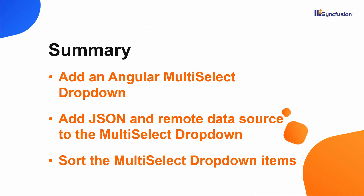In this video, we have seen how to create an Angular project using Visual Studio Code and add a Syncfusion Angular multi-select drop-down to it. Also, we have seen how to load JSON and remote data sources in the multi-select drop-down. If you would like to see the working example, you can download it from the GitHub link shared in the description below. You can also check if you qualify for our community license, giving you a free license key for our entire Angular suite. If you found this video useful, don't forget to click the like button and subscribe to our channel to watch more videos like this. Thanks for watching.